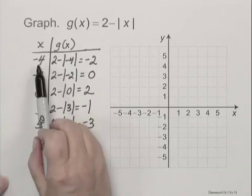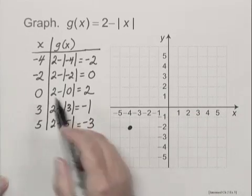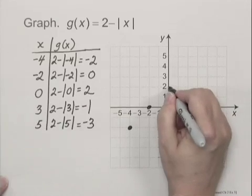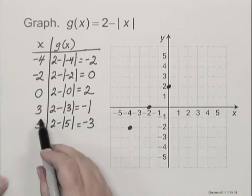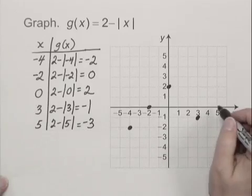So the points we want to graph are (-4, -2), (-2, 0), (0, 2), (3, -1), and (5, -3).